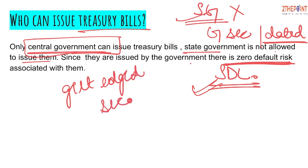I hope the Treasury Bill concept is now clear. The key thing to remember is the working mechanism: interest is not paid on 100 rupees directly — instead, they are issued at a discount below face value. Please revise after the video so that these concepts become clear in your mind. Thank you so much, friends.